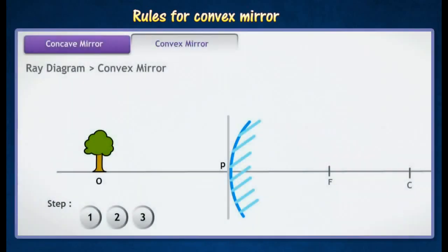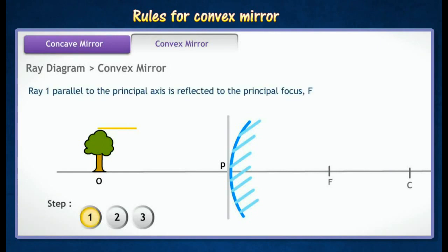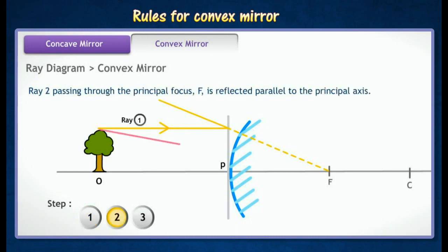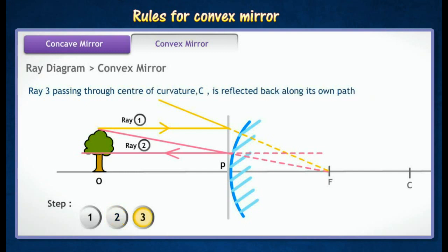The following animation shows the use of a ray diagram to determine the position of an image formed by a convex mirror. Ray 1 parallel to the principal axis is reflected as if it came from principal focus F. Ray 2 passing towards principal focus F is reflected parallel to the principal axis. Ray 3 passing towards C is reflected along its own path.